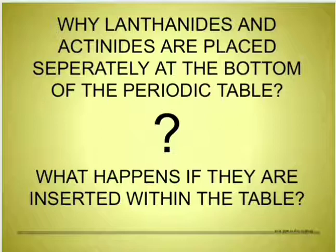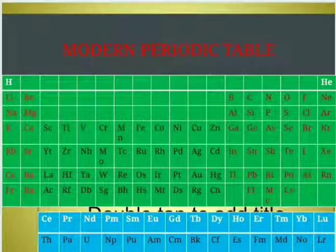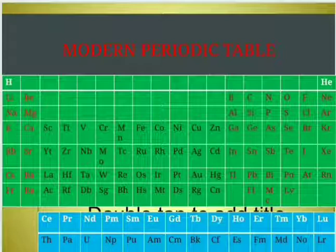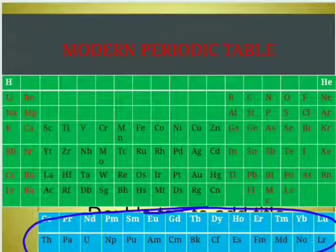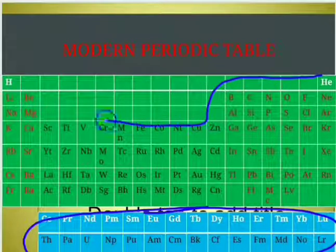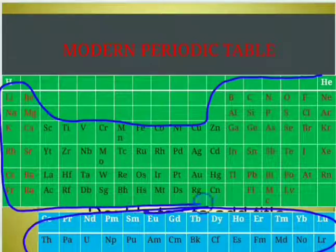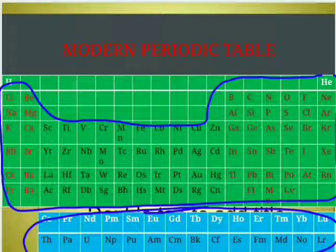This is a modern periodic table with S, P, D, and F block elements, where the F block elements — that is, lanthanoids and actinoids — are kept separately at the bottom, whereas the S, P, and D block elements are placed together in the main table.